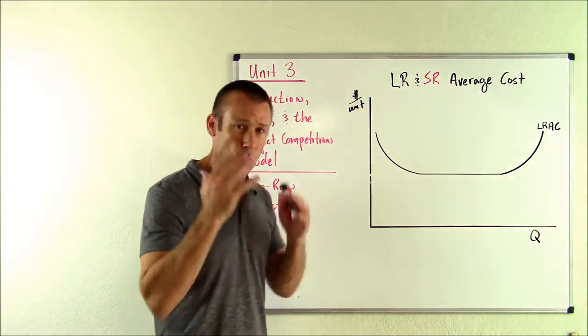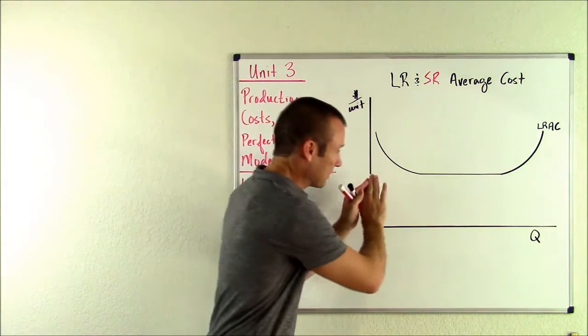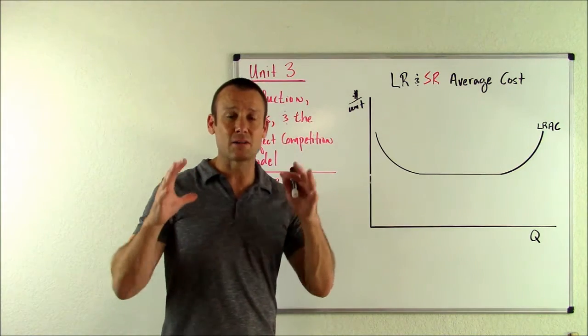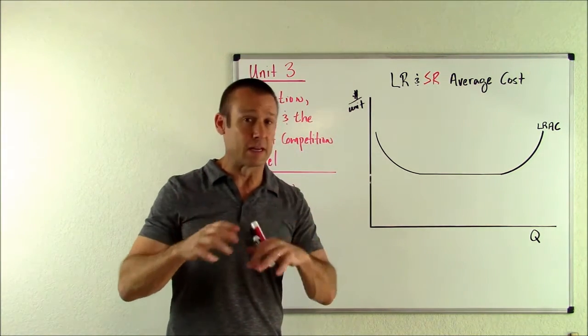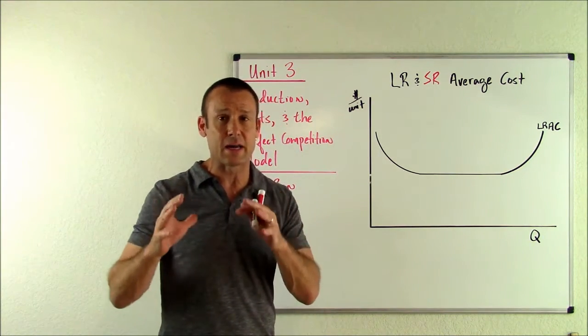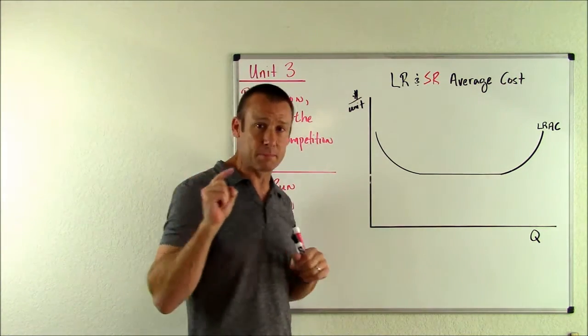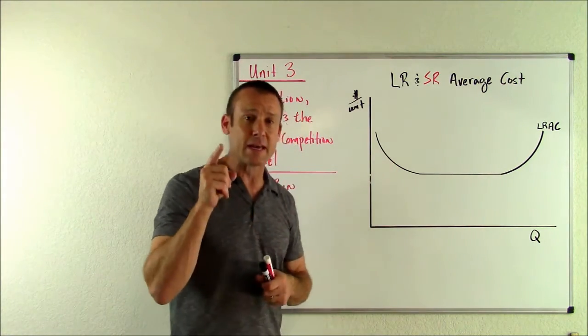Because the big key is what we should kind of be thinking about is as we're moving this direction on this curve, the size of the facility that we are producing in and everything else is variable and it's getting bigger. The scope and size of our production is getting bigger as we're moving that direction. And here's the thing,